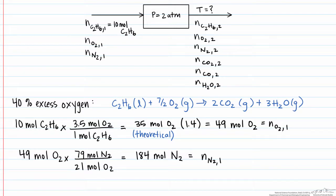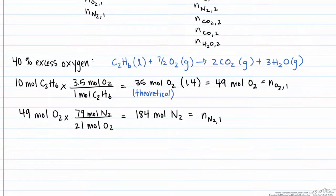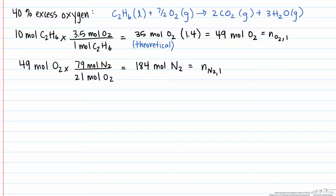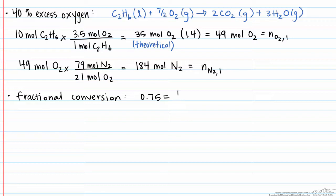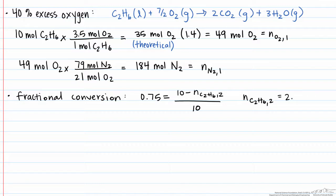It's very important in these combustion reactions not to forget the nitrogen, because the composition of your product stream will be completely wrong without it. The next thing we're going to do is use the fractional conversion to find the amount of ethane coming out. We know that 0.75 equals the number of moles of ethane coming in minus the number of moles of ethane coming out, divided by the number of moles of ethane coming in. This allows us to solve for the number of moles of ethane coming out, which equals 2.5 moles.